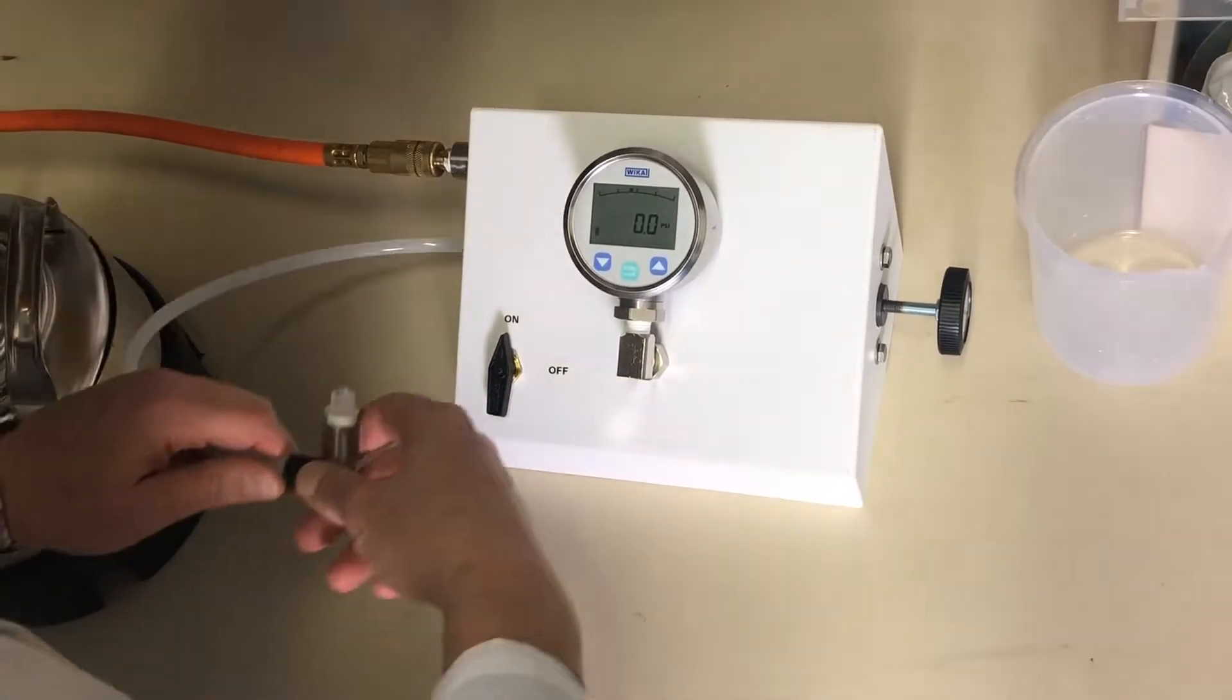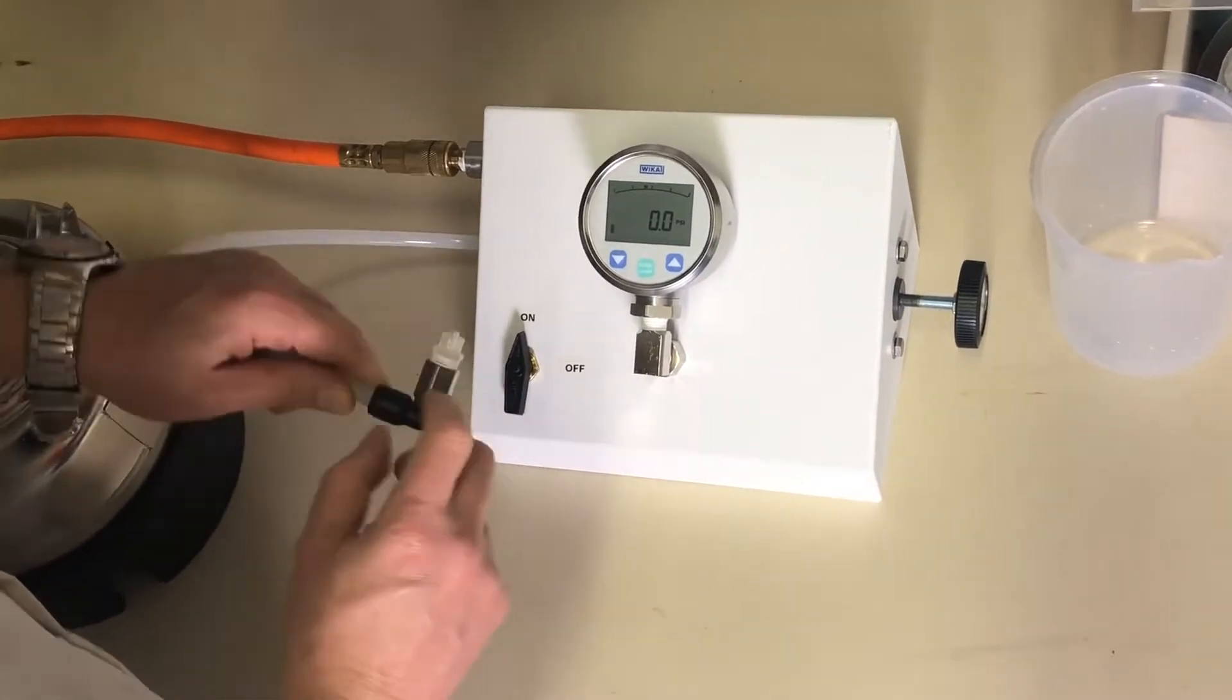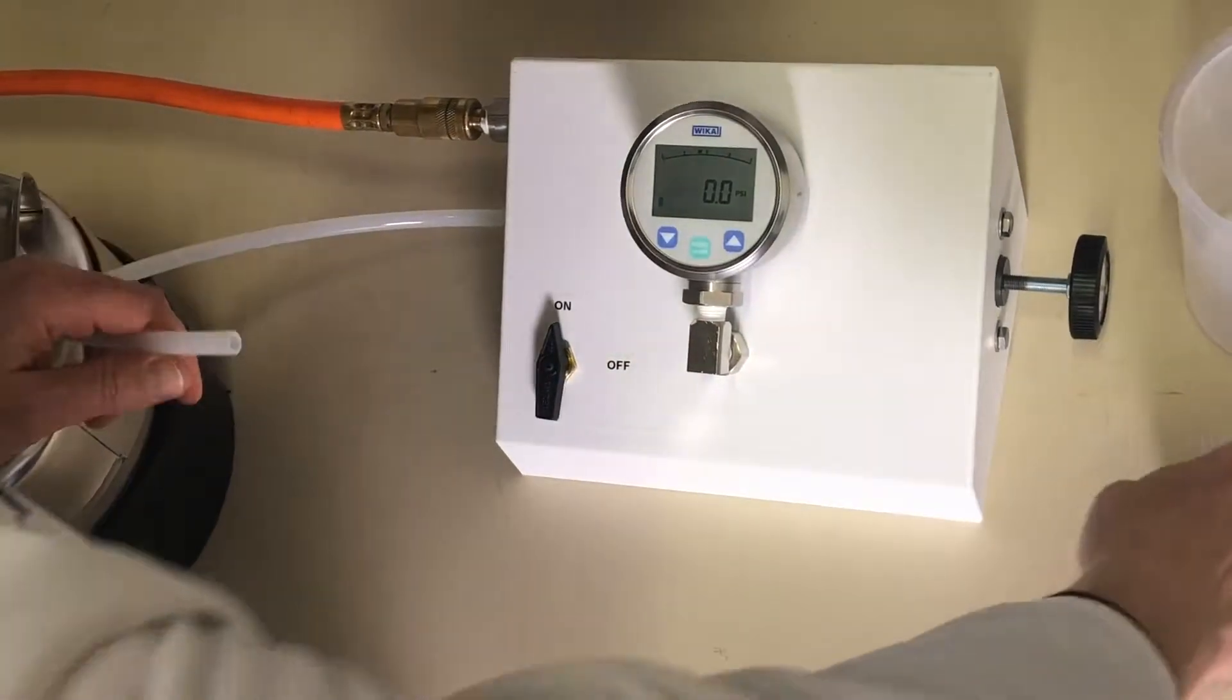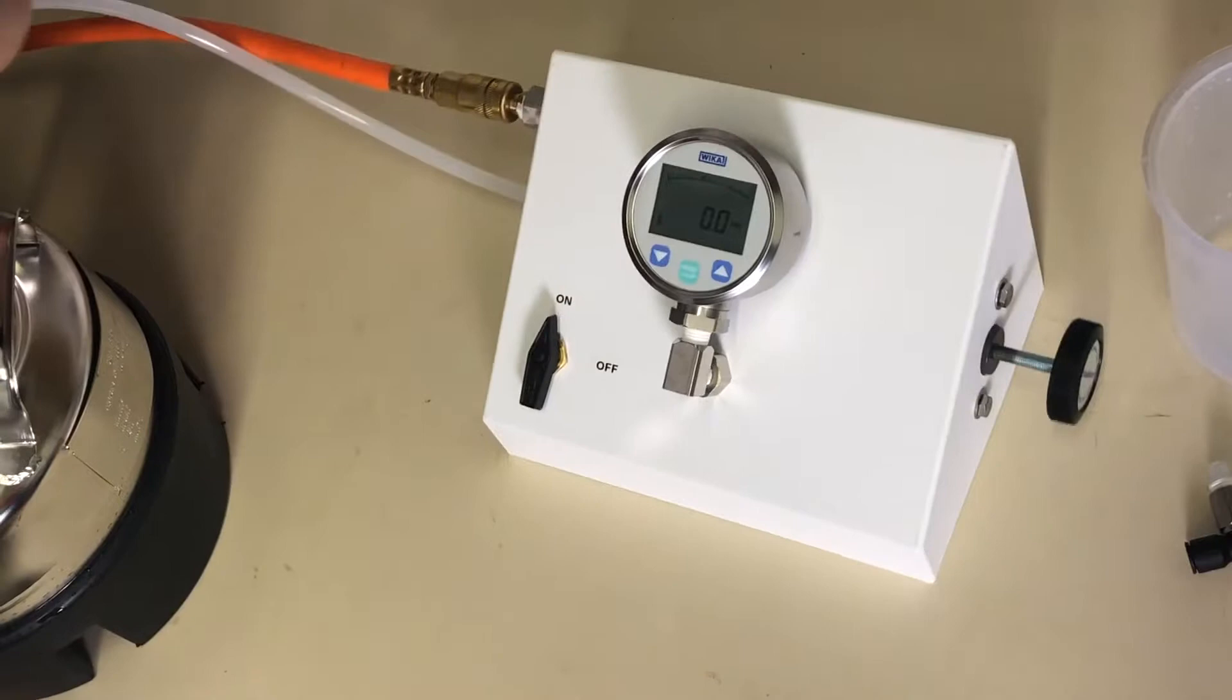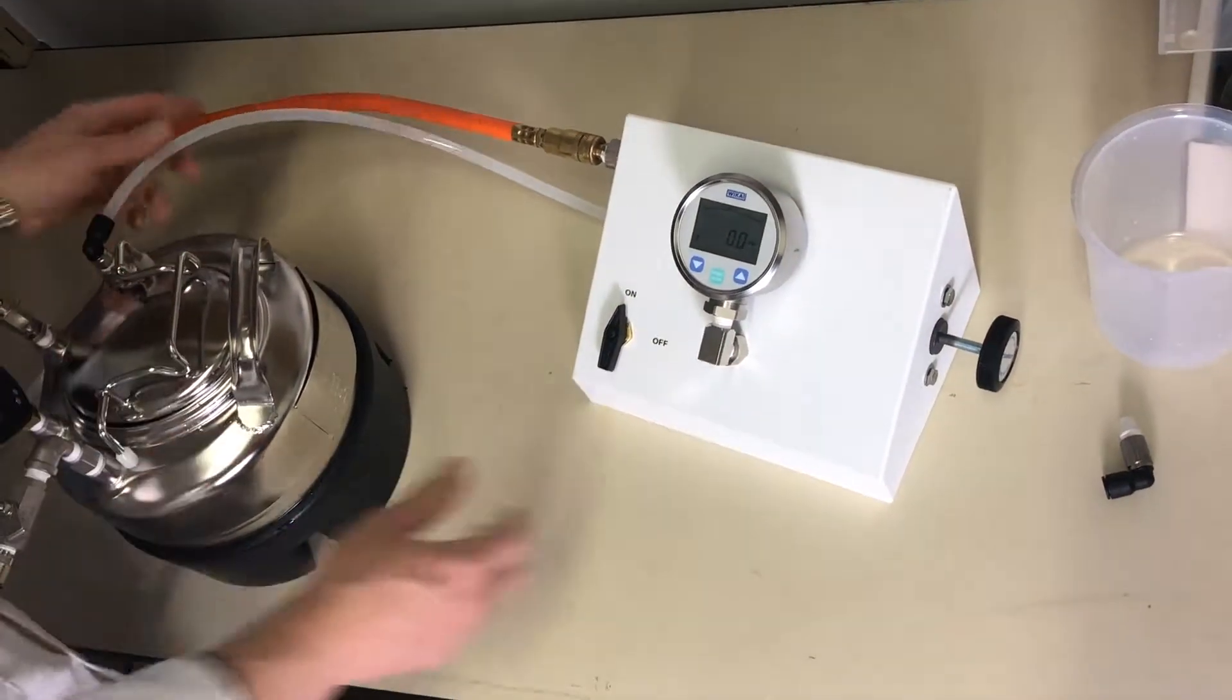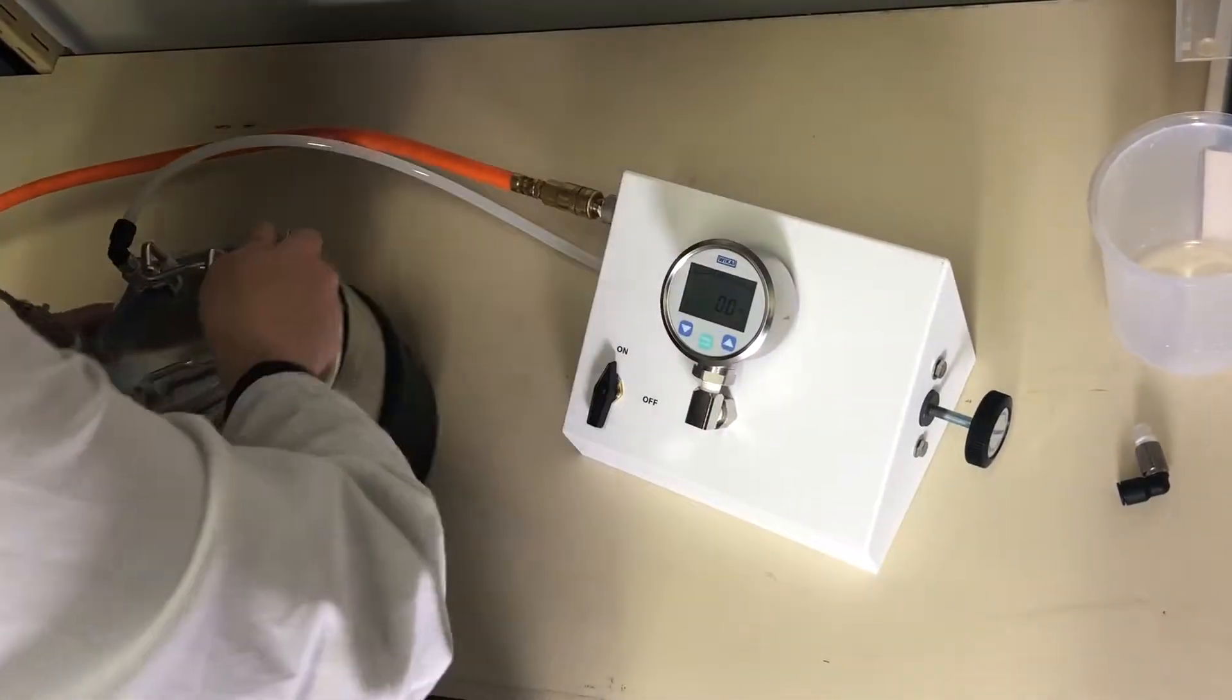We'll disconnect the test fitting, push down on this flange and the hose pulls out. We'll connect to the pressure pot just by pressing, we are ready to go.